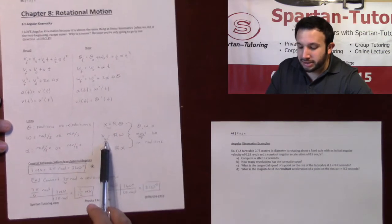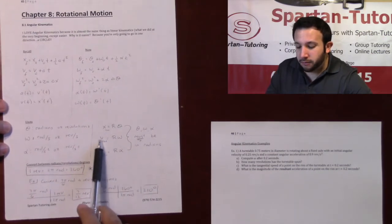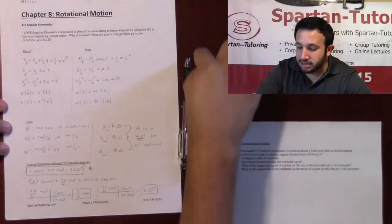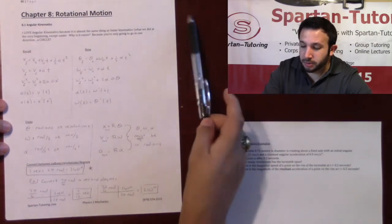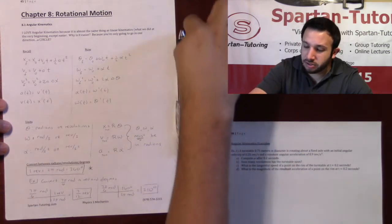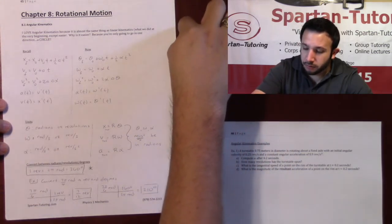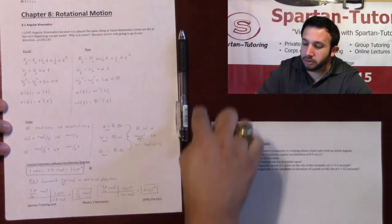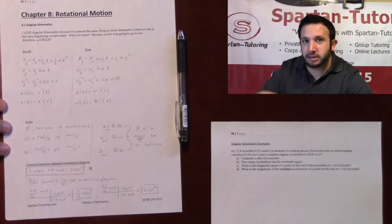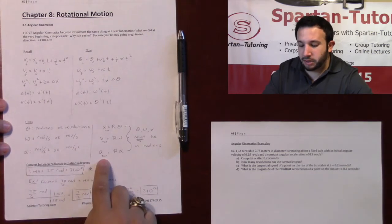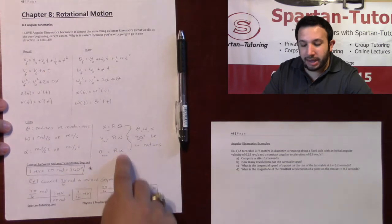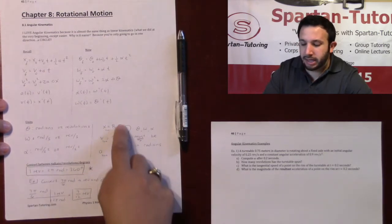If you need to convert from angular to linear or vice versa, you use this relationship: tangential linear distance is r times theta, and tangential linear velocity is r times omega, where r is the distance from the axis of rotation. Because the tip has a greater r, its linear velocity is faster. The same applies to tangential acceleration.